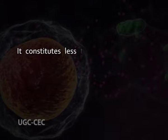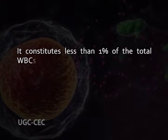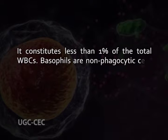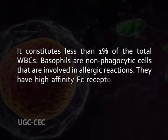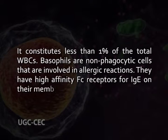Basophils have a lobed nucleus and heavily granulated cytoplasm that stains with the basic dye methylene blue. They constitute less than 1% of the total WBCs. Basophils are non-phagocytic cells involved in allergic reactions. They have high-affinity Fc receptors for IgE on their membrane.